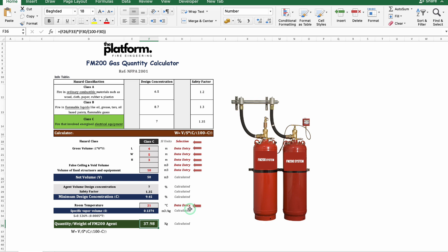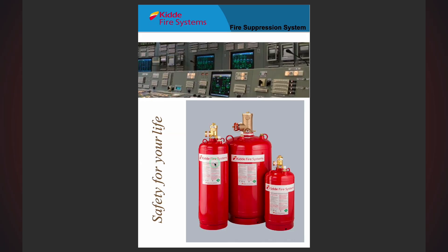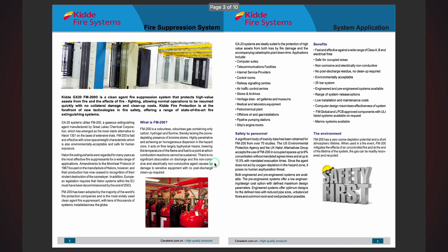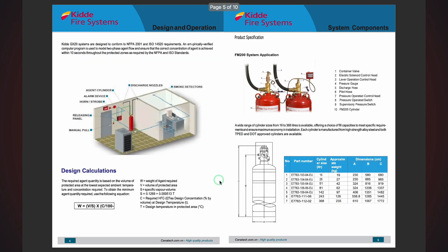The last step is to select a suitable cylinder that can accommodate the desired gas quantity and the discharge nozzles by referring to the manufacturer catalog. This is an example of a Kiddie catalog to select the cylinder range. In our example we'll be selecting the third option of cylinders with an approximate weight of 42 kg.